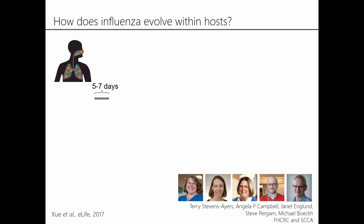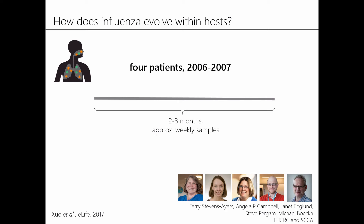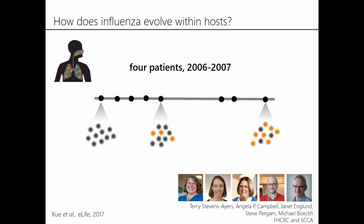Studying flu's within-host evolution is a little bit tricky because most flu infections are extremely short, lasting something like five to seven days. I realize this does not feel very short when you're sick, but from a research standpoint it's hard to do more than take a static cross-section of viral genetic diversity at a single point. We were really interested in measuring viral evolutionary dynamics across time, so we started collaborating with clinicians at the Fred Hutch and the Seattle Cancer Care Alliance to study a cohort of four immunocompromised patients who had extremely lengthy flu infections lasting multiple months.